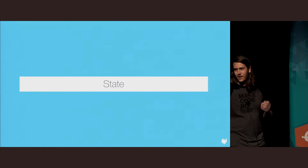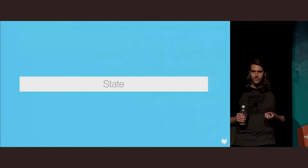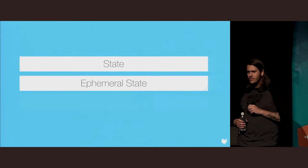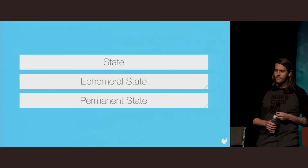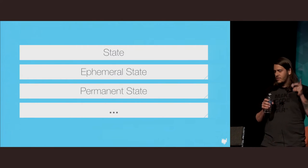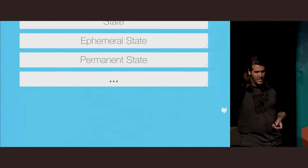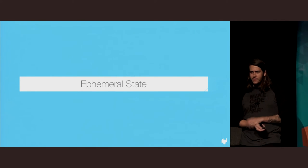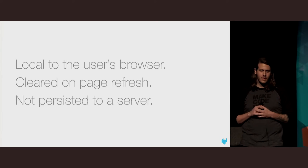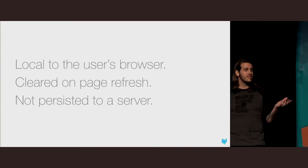I'm here today to talk about state, and there are three types of state I want to introduce. Some of this might be familiar. I'll talk first about two types and then introduce a third. The first two types are ephemeral state and permanent state. Ephemeral state can be thought of as being local to the user's browser. It's typically cleared on page refresh and is generally not persisted to a server.